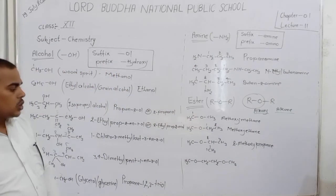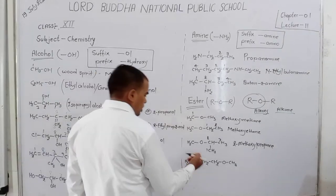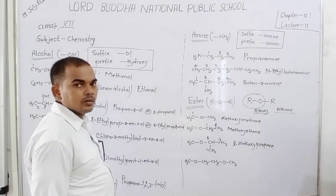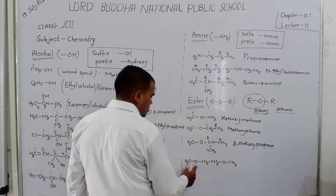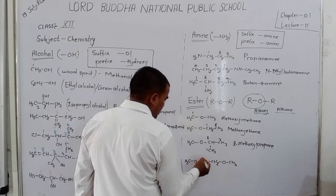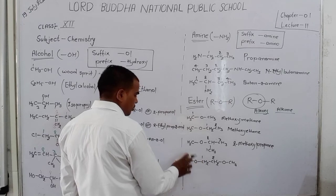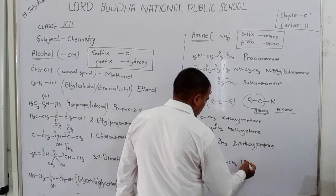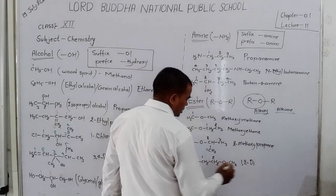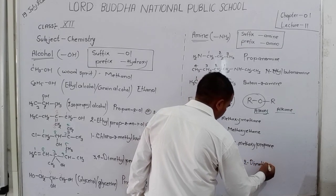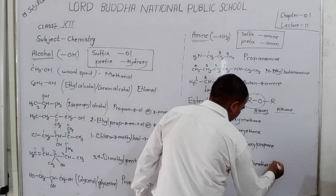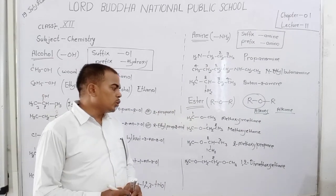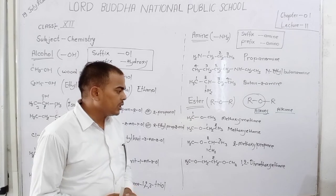Now in this question, there are two methoxy groups present. The parent chain has two carbons — write 'ethane'. At positions 1 and 2, methoxy groups are present. Since there are two methoxy groups, write 'di' — so '1,2-dimethoxy'. The name of this compound is 1,2-Dimethoxyethane.